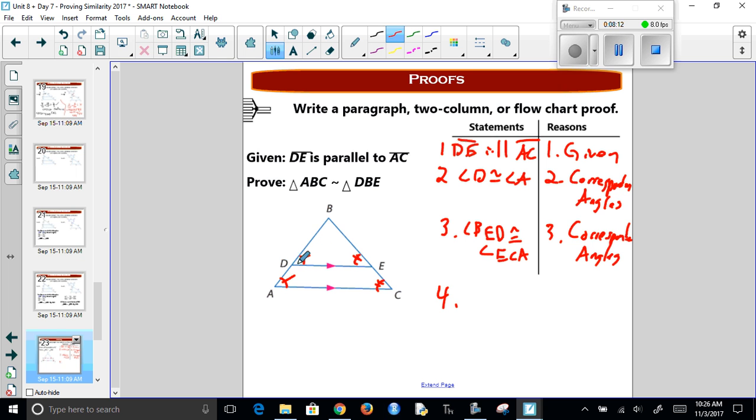And then once we have two angles, now we're good. We can say triangle ABC is similar to triangle DBE. And that's because of AA. Now hopefully you can do the rest of the assignment based off that. Good luck.